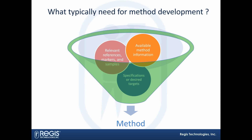When looking for methods to be fit for intended purpose from a contract perspective, we often have situations that fall into one of two categories: either we're given a method from the customer, or we're asked to develop them de novo. In either case, we need to have relevant references, markers, and samples. If there's any method information out there from the literature, or notes from a lab notebook, and also specifications and targets — you need to know what you're aiming for. If you need a sensitive method, you've got to develop a sensitive method.